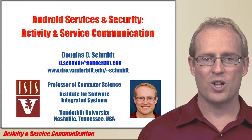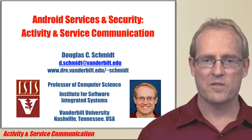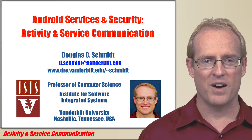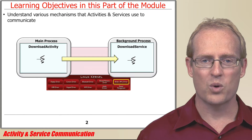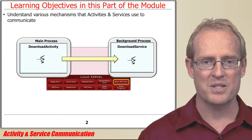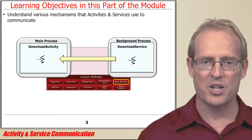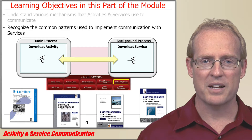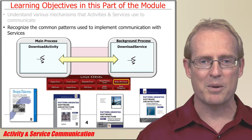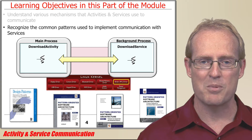Welcome to the next part of the module on Services and Local Interprocess Communication Mechanisms, which focuses on the mechanisms and frameworks provided by Android to enable communication between activities and services. In this part, we'll discuss how activities can communicate to services as well as how services can reply back to activities that initiate communication with them. In addition to describing these mechanisms, we'll also outline common patterns Android uses to implement frameworks that support activity and service communication.